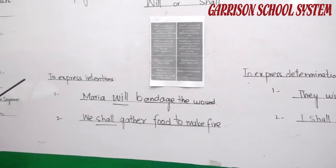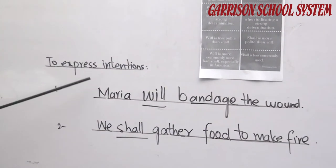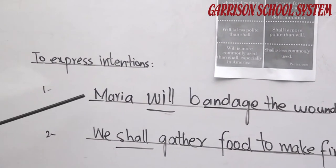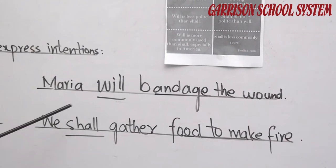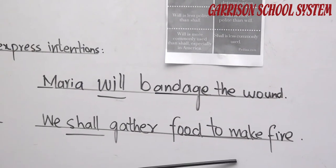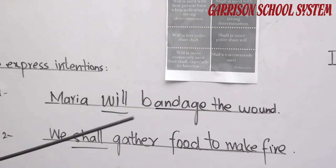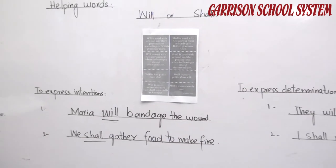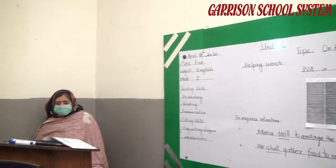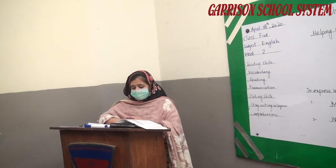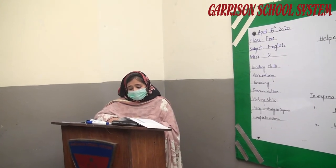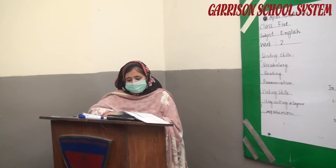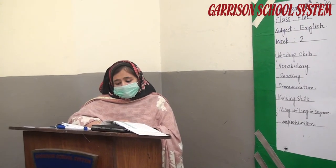Will and shall are also used to express intentions. For example: 'Maria will bandage the wound' and 'We shall gather food to make fire.' Here are a few more examples: 'Sam will make a spear to catch fish in the river' — that is showing the intention of the person. 'We shall gather food to make a fire.'